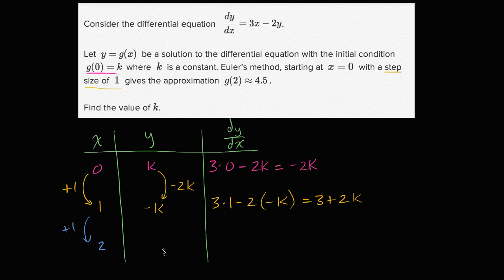We're gonna have something expressed in k, but they're saying that's gonna be 4.5, and then we could use that to solve for k. So if we increment by 1 in x, we should increment our y by 1 times (3 + 2k), so we're gonna increment by 3 + 2k.